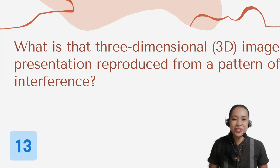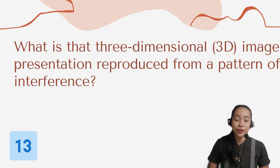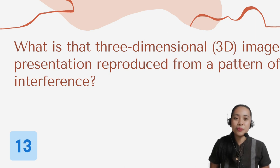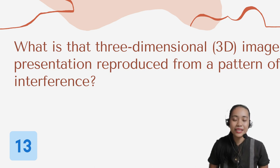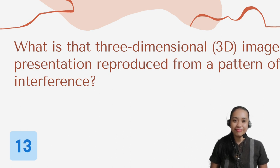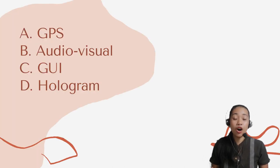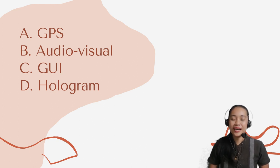Question number 13. What is that three-dimensional or 3D image presentation reproduced from a pattern of interference? Letter A: GPS. B: Audio visual. C: GUI. Or letter D: Hologram.